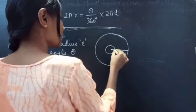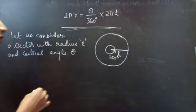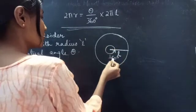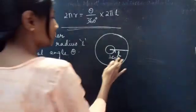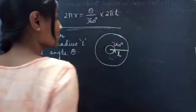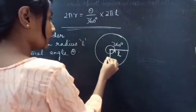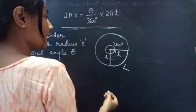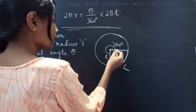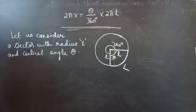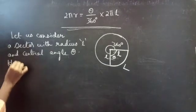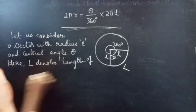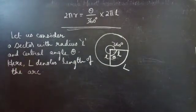One complete rotation takes 360 degrees. This circle is formed by one complete rotation of 360 degrees. Now consider a sector with radius L, and let the sector's arc length be capital L with angle theta. Here capital L denotes the length of the arc — this arc.